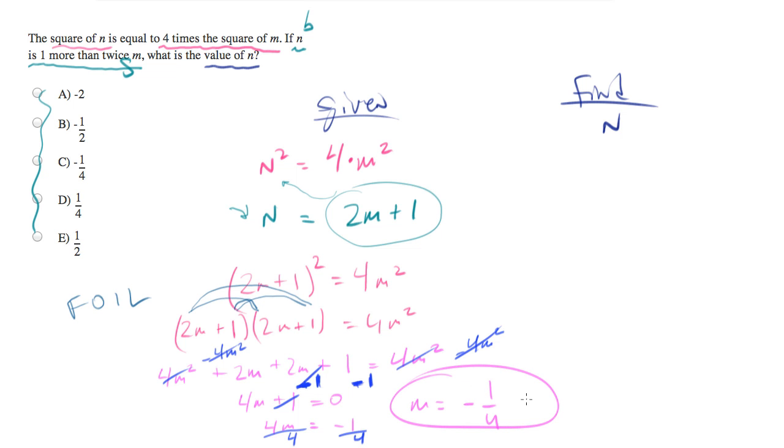Which is answer choice C. Duh! No, it's not. m is negative 1 quarter. We have to plug that back in to get n. We were asked to find n. Don't make that mistake. It's deadly.